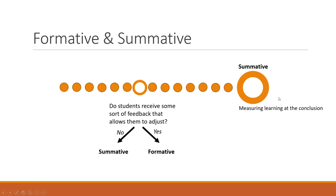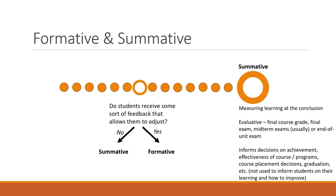Summative assessment measures learning at the conclusion of a class, learning event, or unit. It is evaluative — like a final course grade, a final exam grade, midterm exams, or end-of-unit exams — evaluating where a student is at a point in time. It can inform decisions on achievement, effectiveness of the course or program, course placement, graduation, and similar decisions. But it's not used to inform students on their learning and how to improve. So summative assessment can be thought of as assessment and information and results for us, for decision-makers.